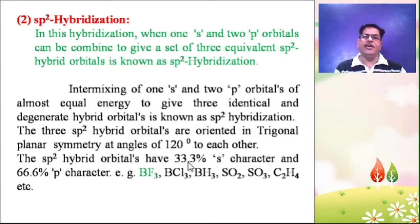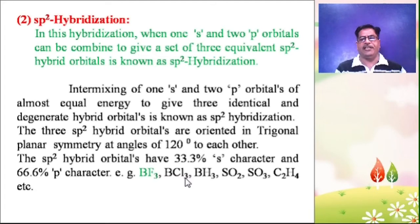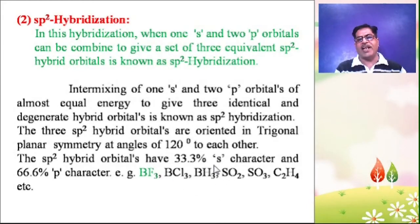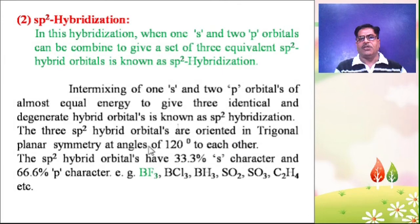The SP2 hybrid orbitals have 33.3% S character and 66.6% P character. Suitable examples of SP2 hybridization include BF3, boron trichloride, boron trihydride, sulfur dioxide, sulfur trioxide, ethylene, etc. These are all important examples of SP2 hybridization.